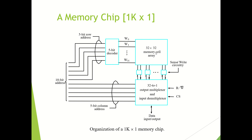32 by 32 means 32 rows and 32 columns, but finally we are getting only 1 output since there is 1 data line — we get the value from 1 single cell. The arrangement is a 32 by 32 memory cell array. To identify any one of the 32 rows we use the word line. Since 32 rows are there, W0 to W31 are 32 word lines, and at a time any one word line will be activated.